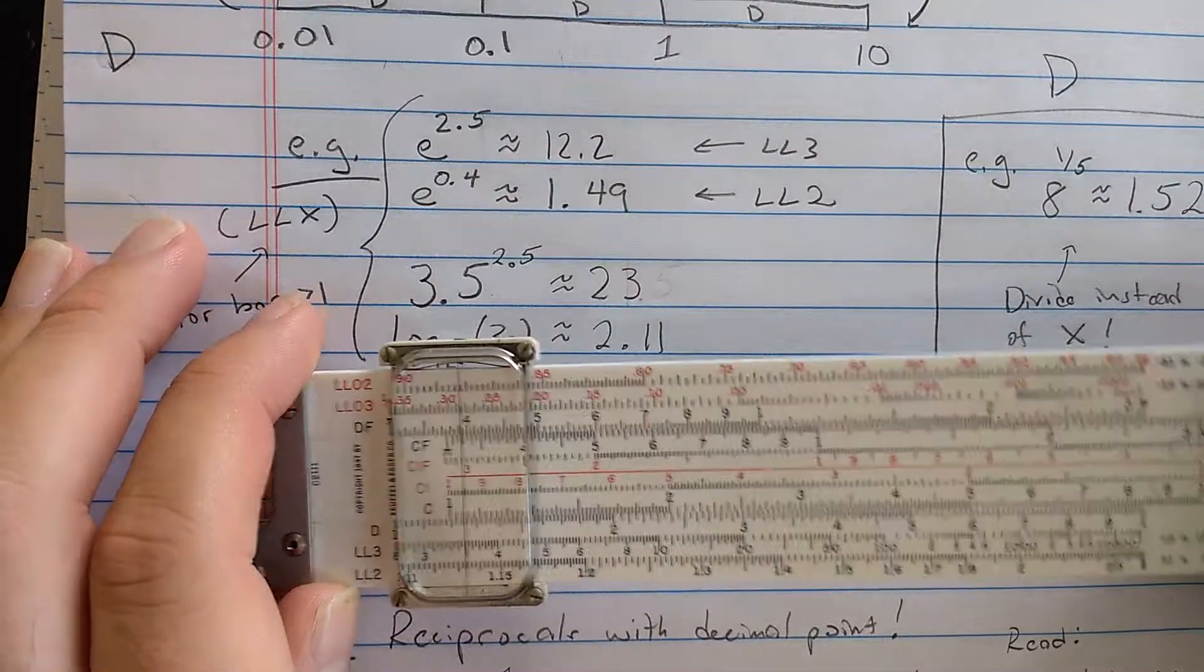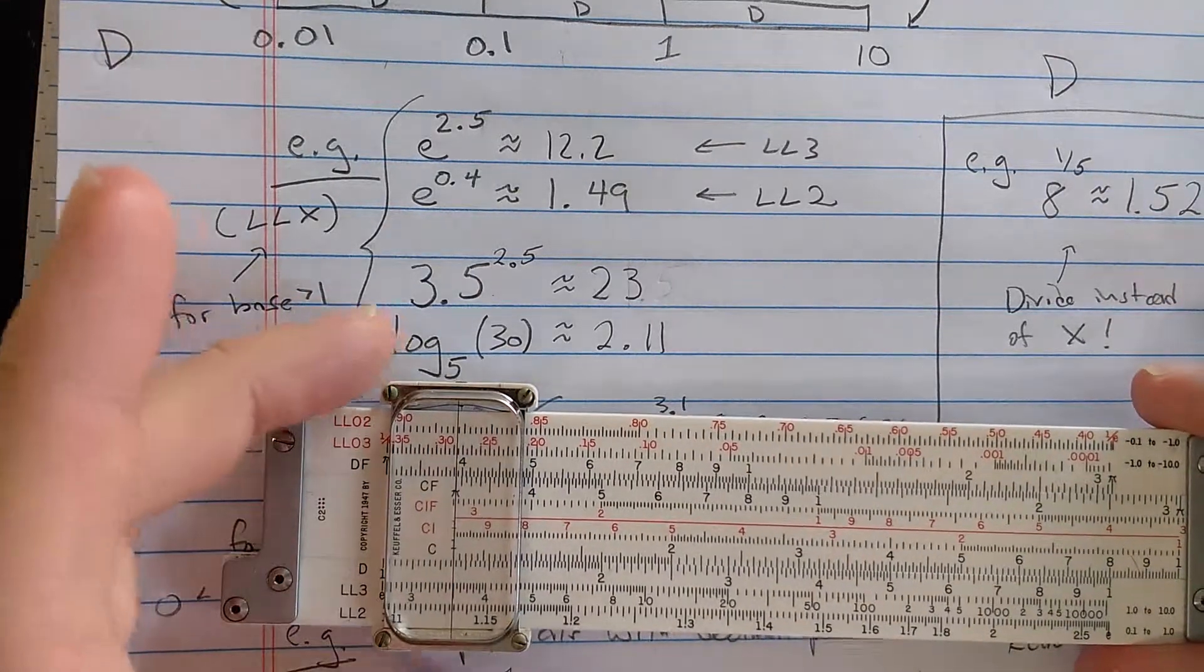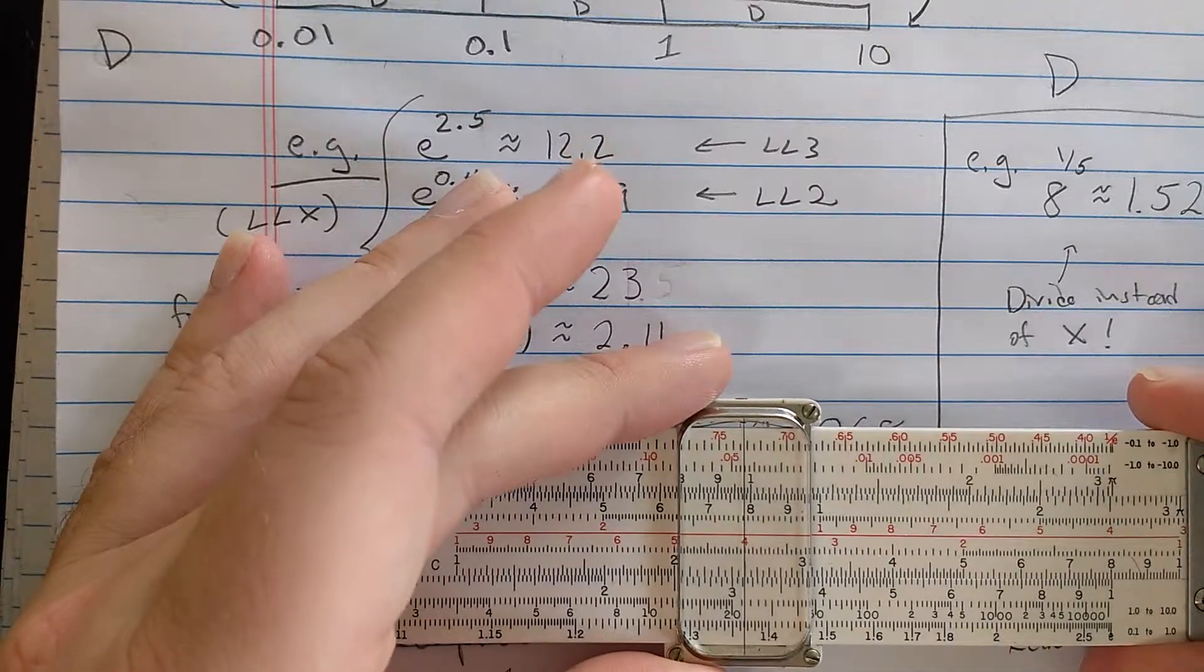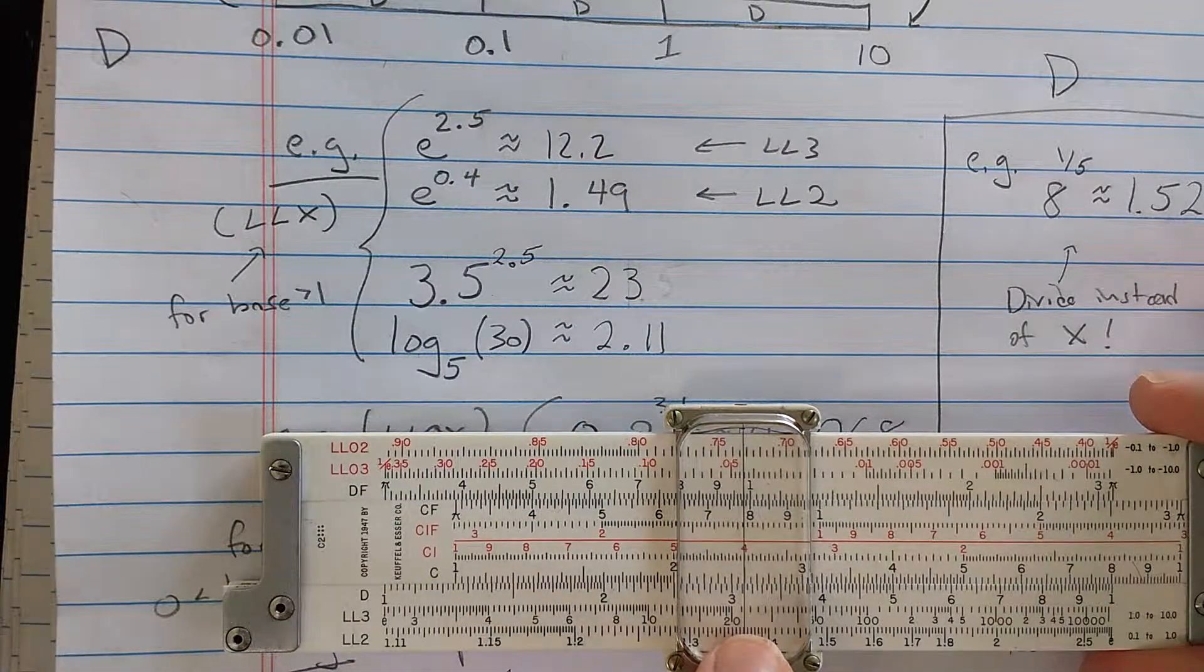Then I'm going to align the index, the left index of the C scale. Then I'm going to go out to 2.5 on the C scale. And then read the result there on the LL3 scale, 23.